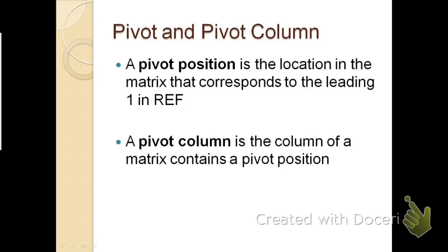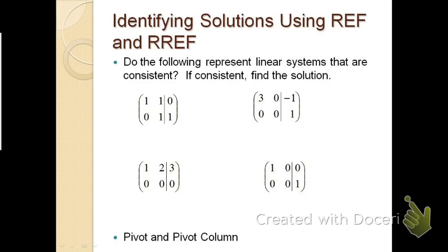Now let's define pivot positions and pivot columns. A pivot position, sometimes just called a pivot, is the location in the matrix corresponding to the leading one in the REF. The pivot column is the column that contains the pivot position. Going back to our previous matrices, we can identify the pivot positions and highlight the corresponding pivot columns.